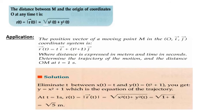Application. The position vector of a moving point m in the oij coordinate system is r equals ti plus (t squared plus 1)j. So, for example, r1 equals 1i plus 2j. At t equals 2, r2 equals 2i plus 5j, and so on.